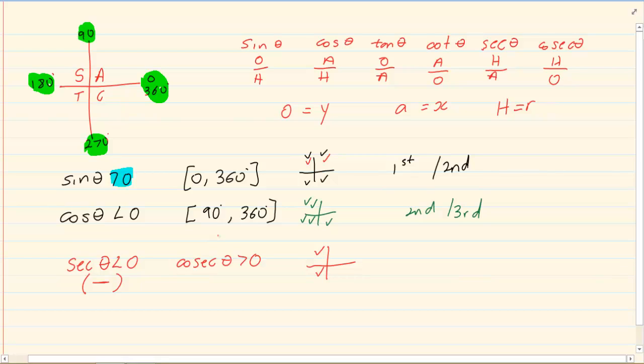Now, once you are done with that, where is cosec greater than 0? Now, cosec is greater than 0 where it is positive. Now, positive, we know in the first quadrant all is positive. So cosec is definitely going to be positive in the first quadrant. The second place that it is positive in the second quadrant.